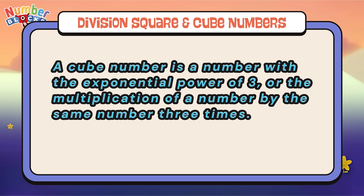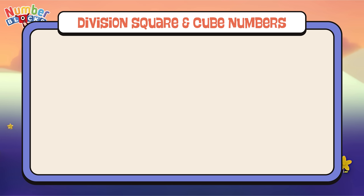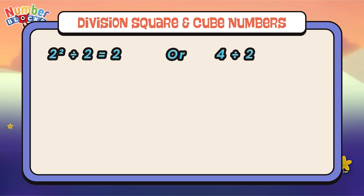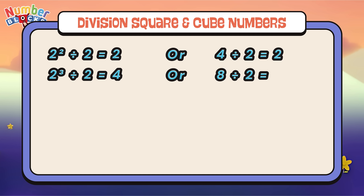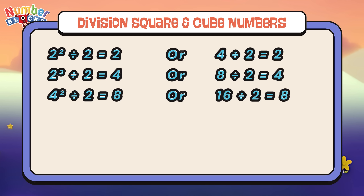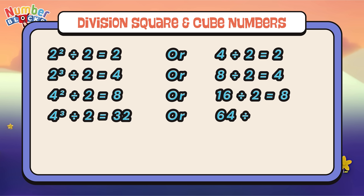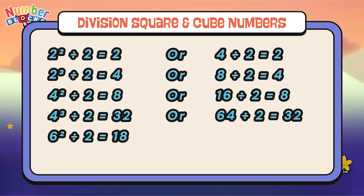Let's recap division of square and cube numbers. 2 squared divided by 2 is equals to 2, or 4 divided by 2 is equals to 2. 2 cubed divided by 2 is equals to 4, or 8 divided by 2 is equals to 4. 4 squared divided by 2 is equals to 8, or 16 divided by 2 is equals to 8. 4 cubed divided by 2 is equals to 32, or 64 divided by 2 is equals to 32. 6 squared divided by 2 is equals to 18, or 36 divided by 2 is equals to 18.